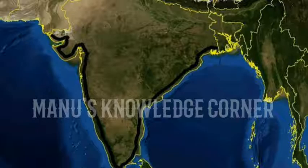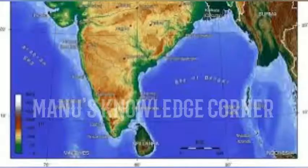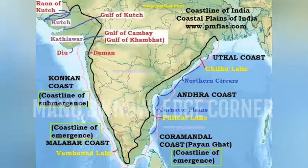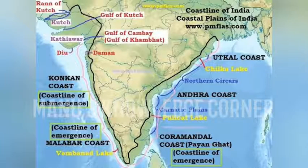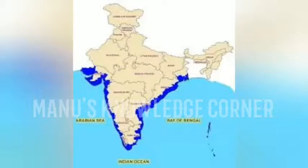These coastal plains are known by different names locally: Utkhal Coast in Odisha, Sarkar Coast in Andhra Pradesh, and Karamandal Coast in Tamil Nadu.